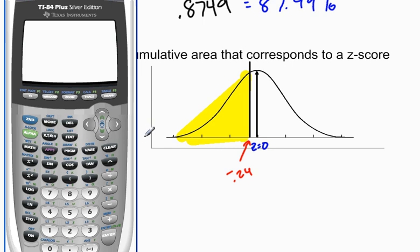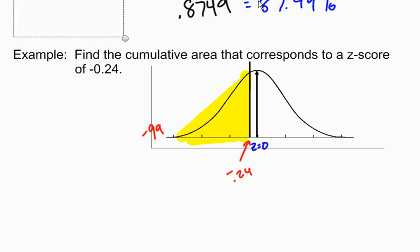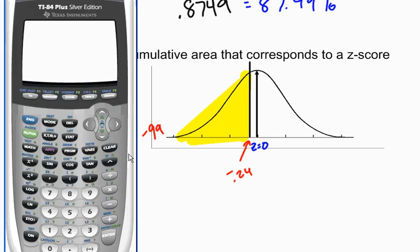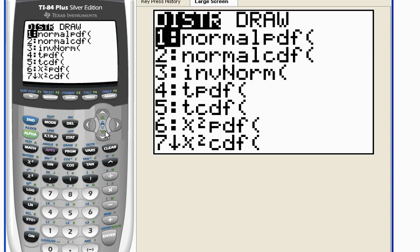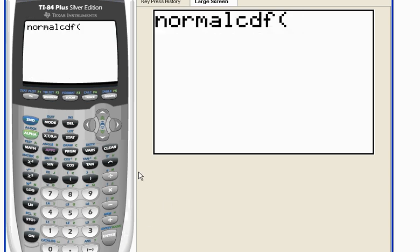So going to the left, I'm going to use a left-hand boundary of negative 99. Some textbooks and teachers will tell you to use negative 10,000 if you're going to the left or positive 10,000 if you're going to the right. But in reality, if you go anywhere beyond like 3, a z-score of 3, you're going to get almost the exact same values. So let's go second vars for variables and go down to number 2. I'm going to use the normalcdf function.